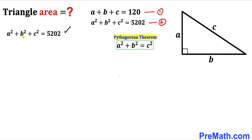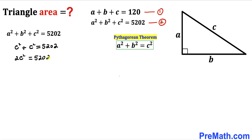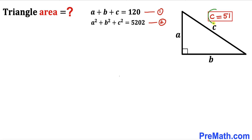Substituting into equation 2, we replace A² plus B² with C², giving us C² plus C² equals 5202. Combining like terms on the left-hand side gives 2C² equals 5202. Dividing both sides by 2, C² equals 2601. Taking the square root of both sides, our side length C turns out to be 51 units.